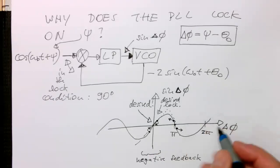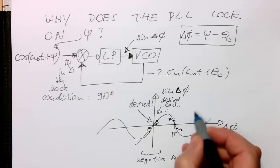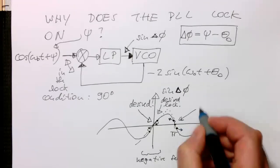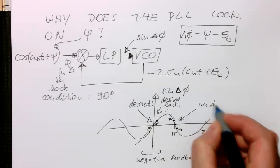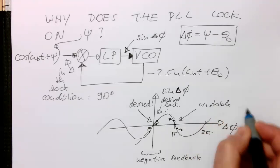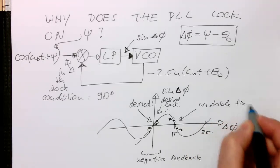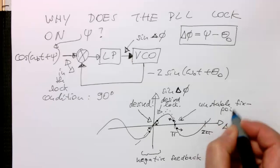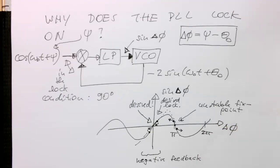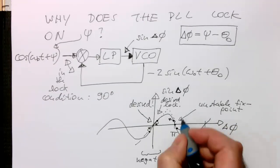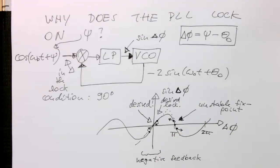So therefore here, this is an unstable fixed point. And so with that, we have got no problems. So the PLL will always lock. Okay.